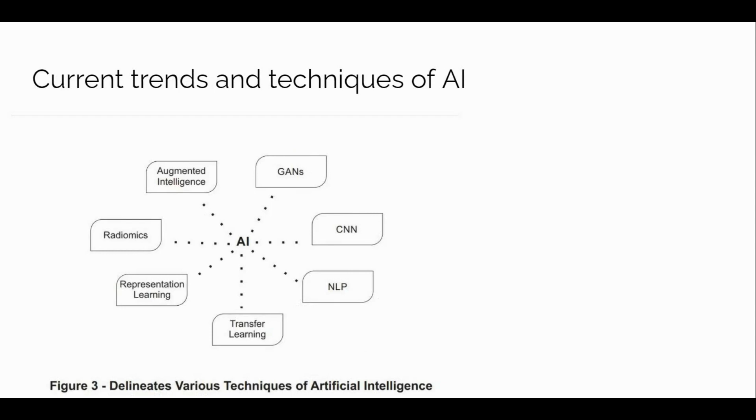In this review, various studies have been discussed delineating the applications of various techniques of AI, such as convolutional neural networks, radiomics, transfer learning, and so on.